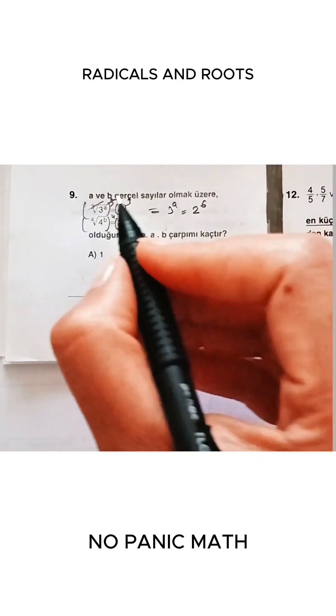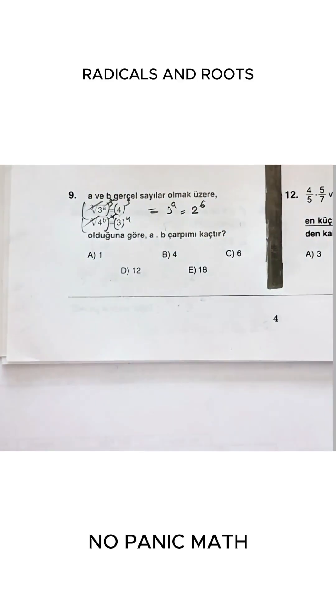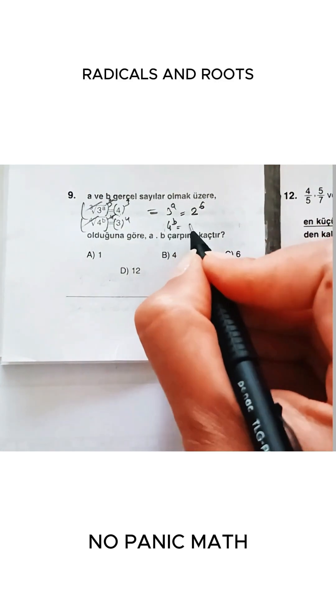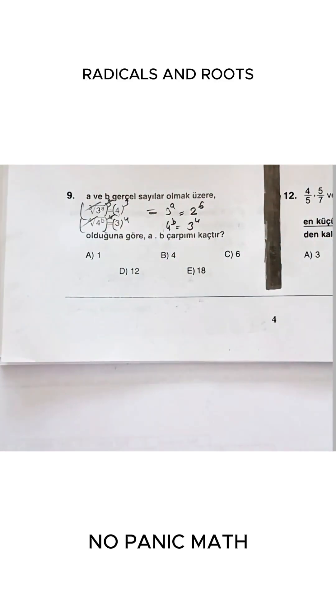So two times three makes six. All right, so what did we do here? The fours have eliminated the root. So four to the power of b equals three to the power of four, friends.